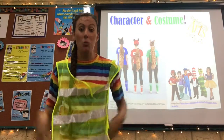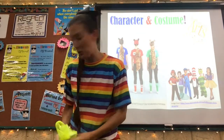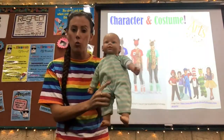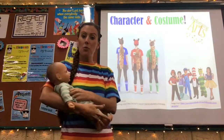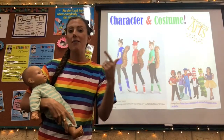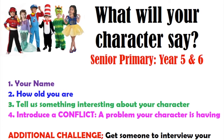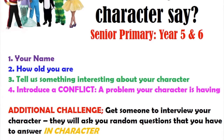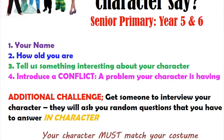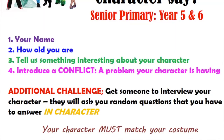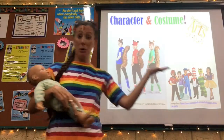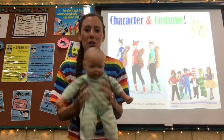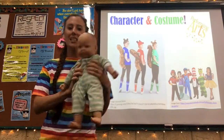Now I'm going to give you a different example with a different costume — in fact, I'm not going to use a costume, I'm going to use a prop. A costume is something you wear; a prop is something you hold. I'm going to give you an example of what senior primary — year five and six — might do. They do the same thing: name, age, something interesting about their character, and a conflict. There is an extra challenge for year fives and sixes, but in order to do that extra challenge you need somebody else, and I'm all by myself, so I can't demonstrate that. But let me show you what character I could create with my prop.